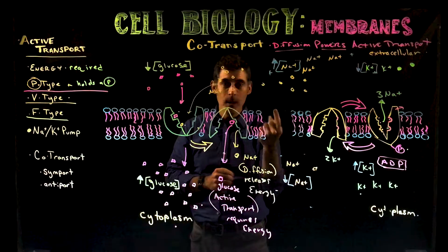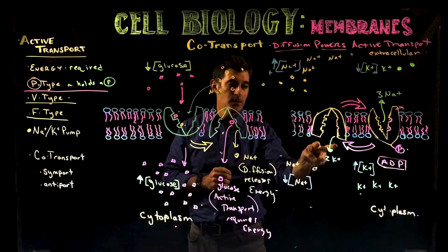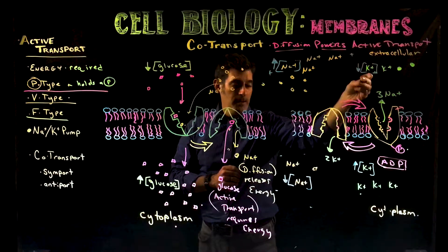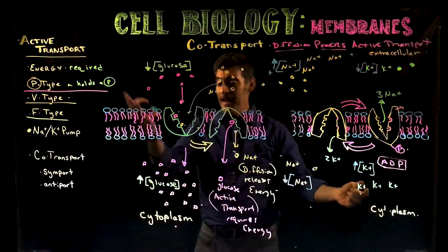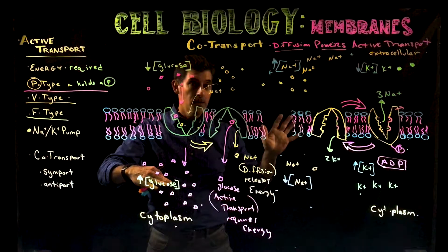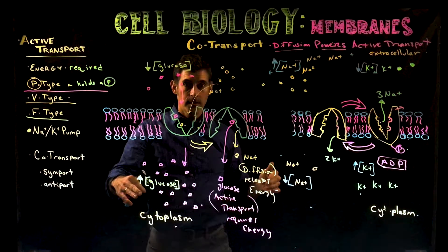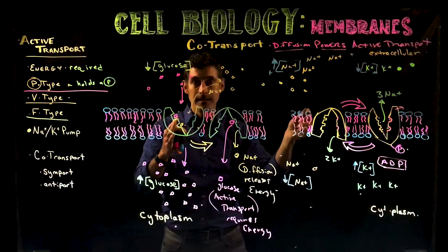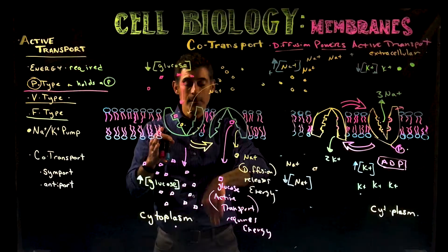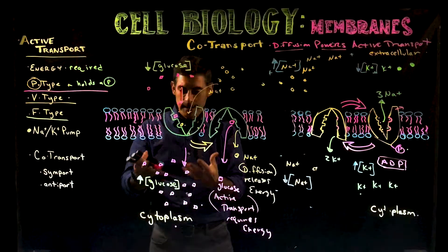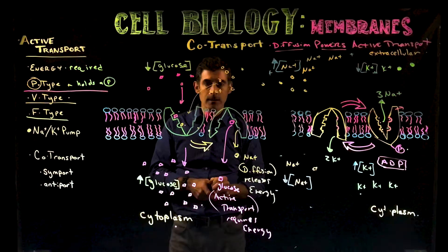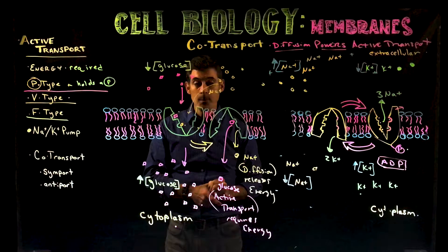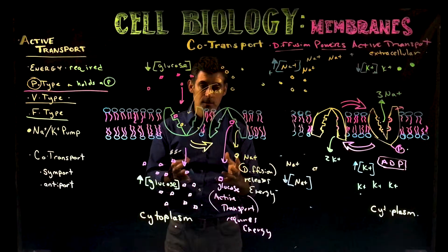You could think about it this way: one ATP used in the sodium-potassium pump was actually moving three sodium ions, two potassium ions, and indirectly a glucose molecule too. Because if we tie it to the diffusion of sodium back into the cell, we can add in that glucose as an action taken based on the energy expended from that one single ATP. This is how things connect.